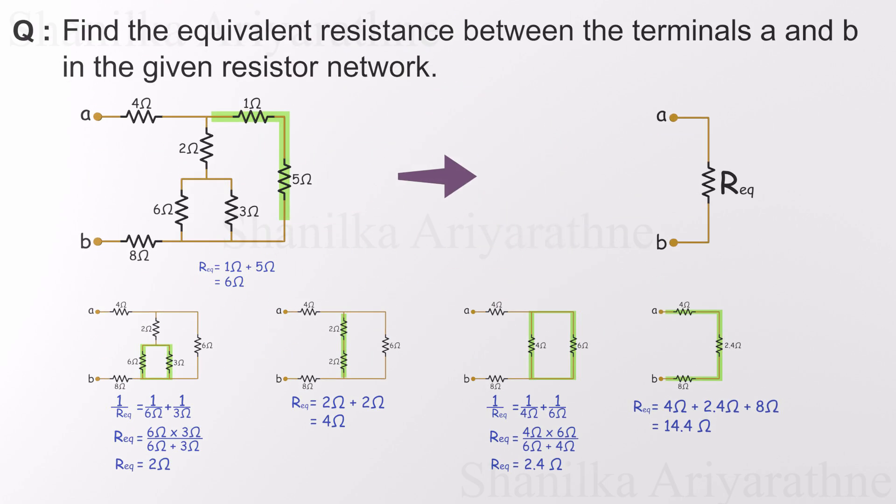So even though this circuit looked complex at first, the key is to take it one step at a time. Identify series and parallel parts, simplify gradually, and before you know it, you're done. Our final equivalent resistance is 14.4 ohms. That means we can replace the entire resistor network with a single 14.4-ohm resistor and get the exact same electrical behavior between terminals A and B.